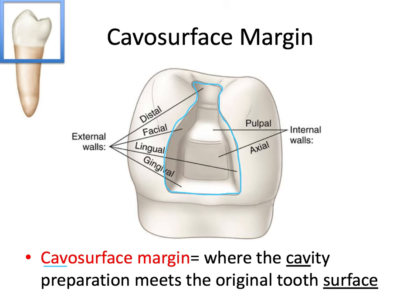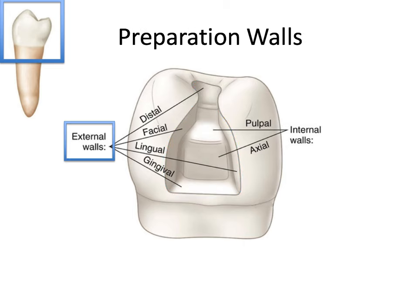If you understand that concept, you're in great shape for the rest. Now we can talk about the preparation walls, starting with the external or outer walls. These are distinct walls of the cavity preparation that contact the cavosurface margin — in other words, the walls that share an edge with the cavosurface margin. These walls are named for the outer tooth surface they are both parallel to and closest to.